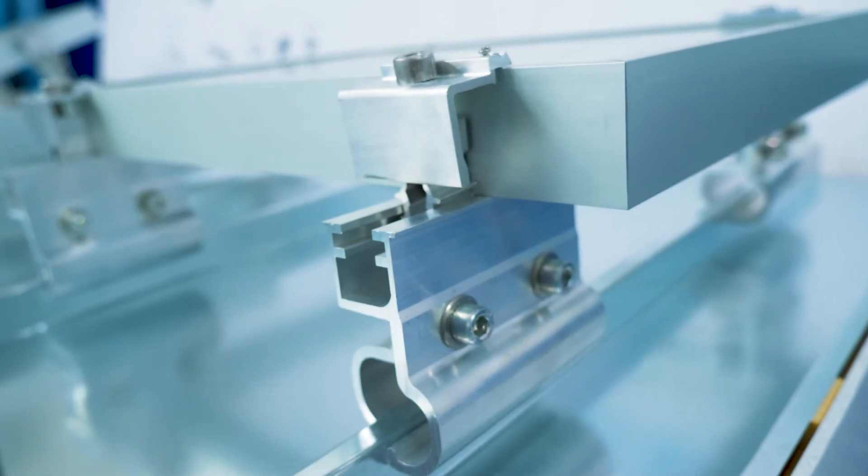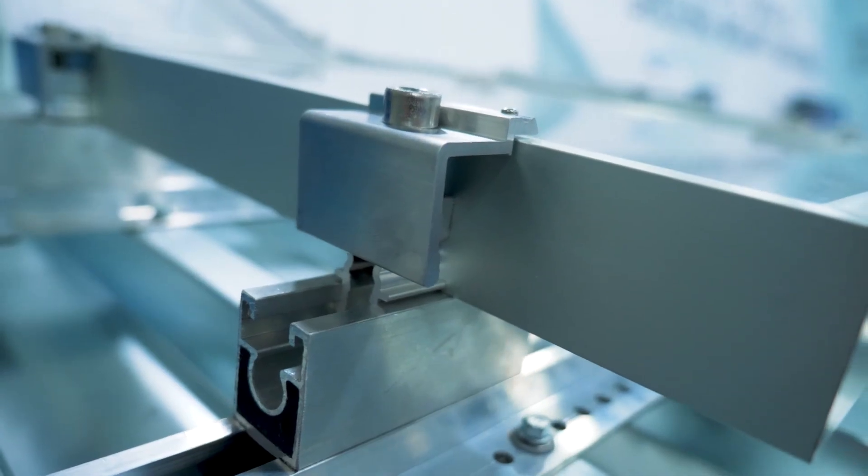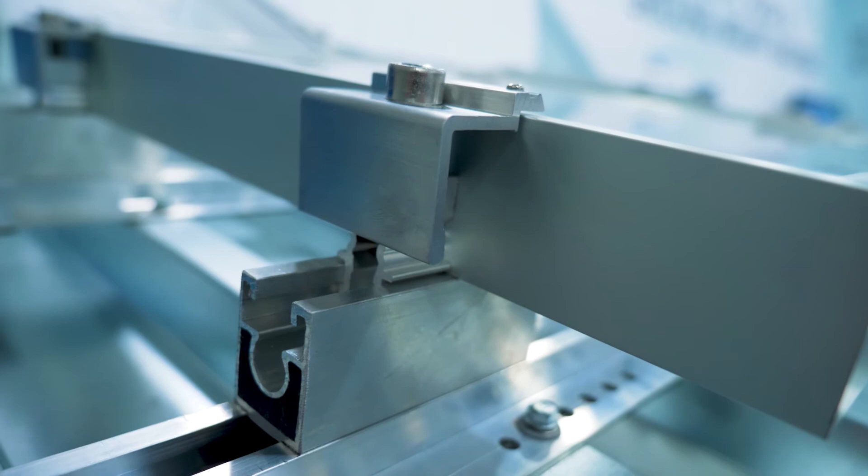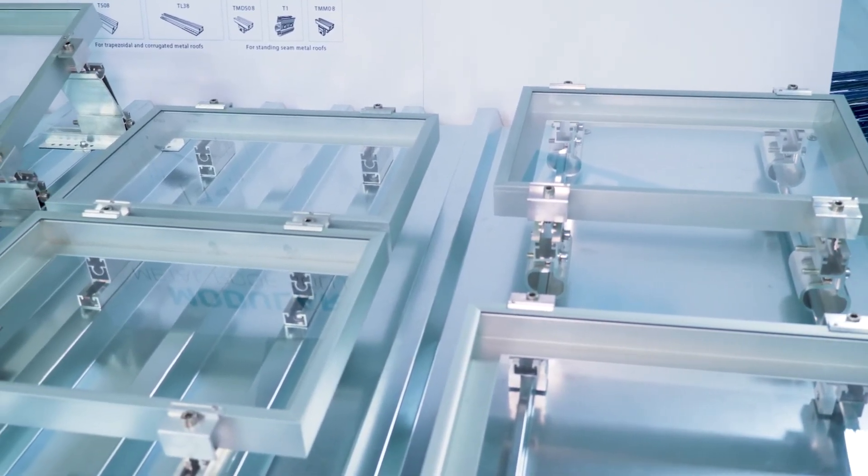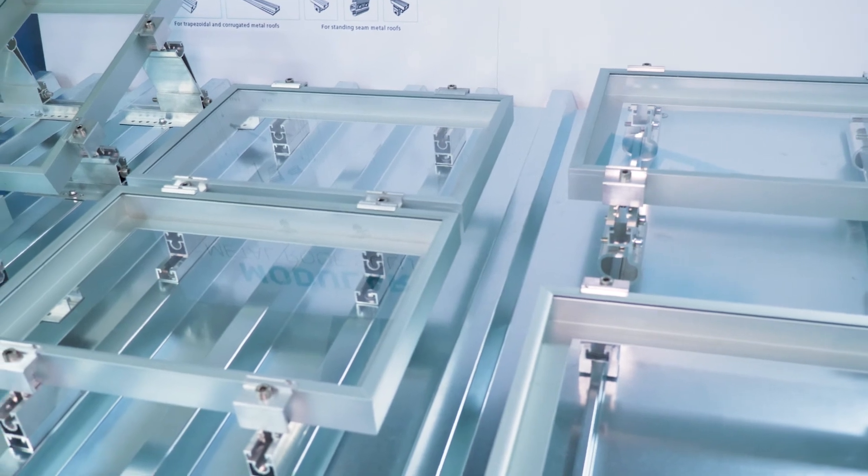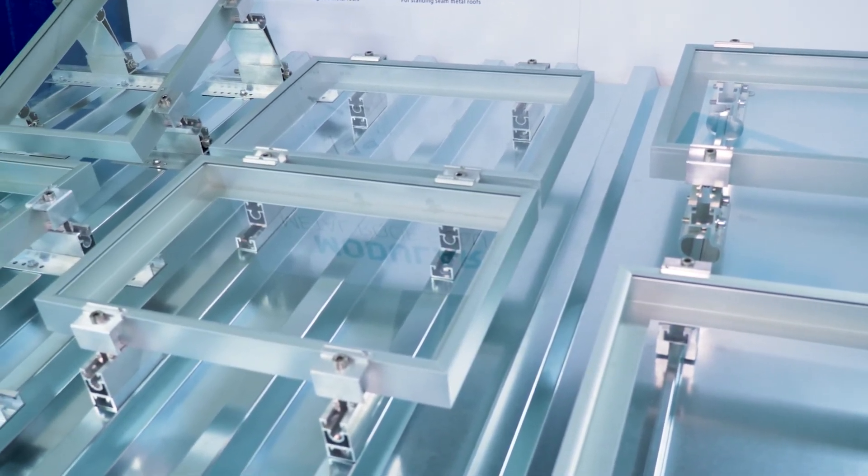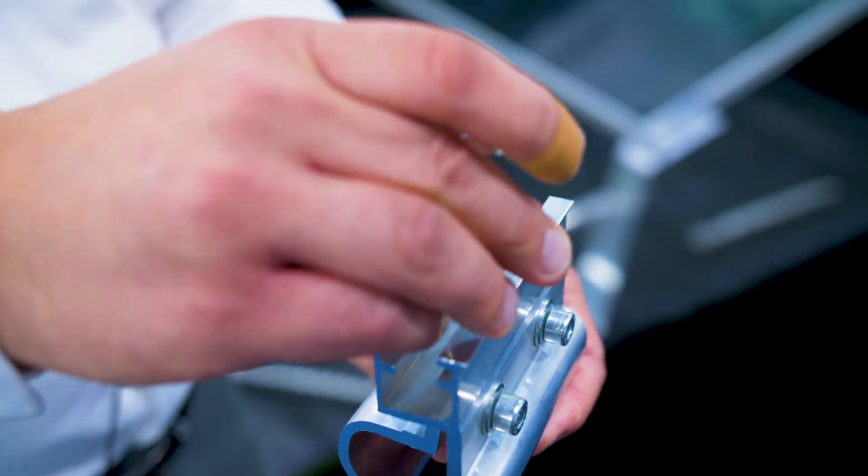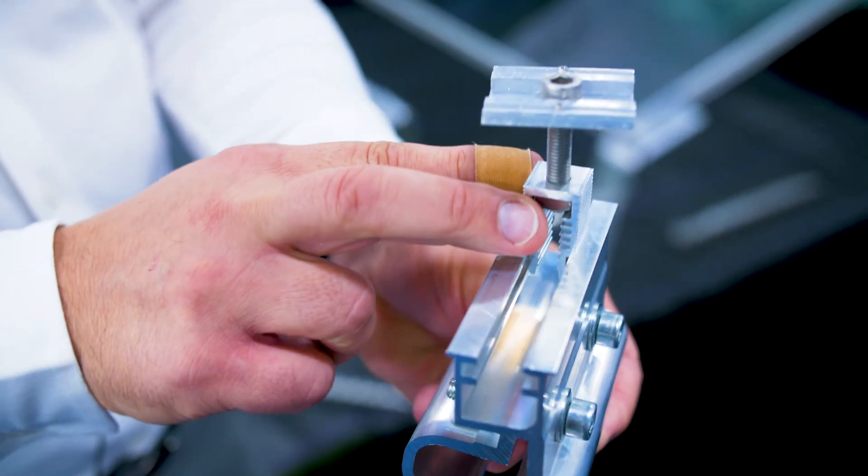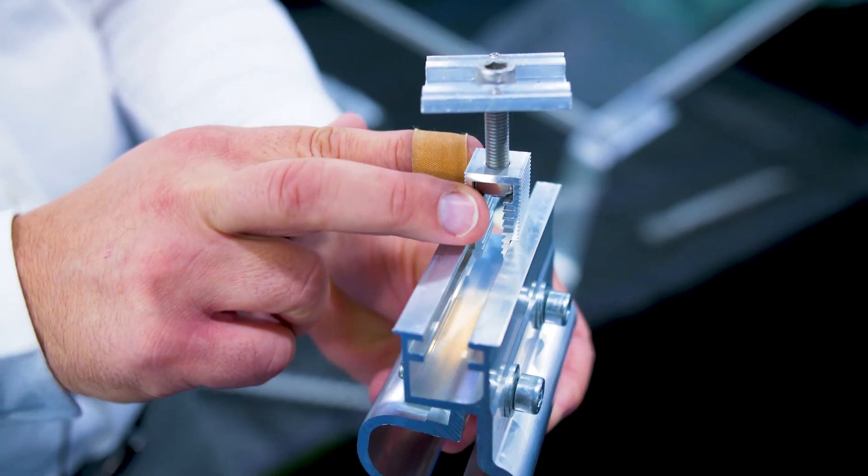For the standing seam metal rooftops we have one clamp that fits pretty much any profile in the US that allows a smooth and straightforward installation effort. There's a little rail piece that is built in already that allows for a little more flexibility than some competing products and allows for easy installation there.